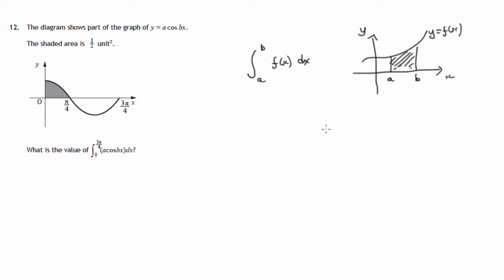Now if the graph happened to be below the x axis between a and b, then this would give us a value which is the negative of the area.